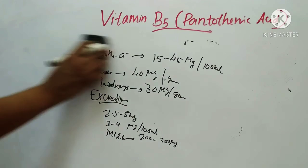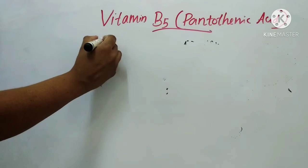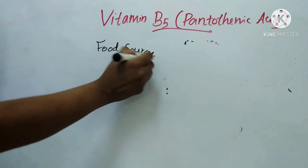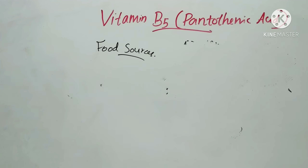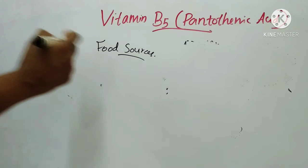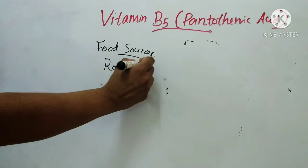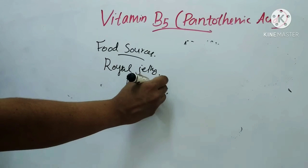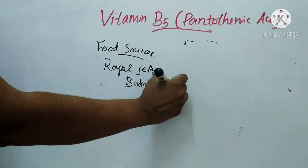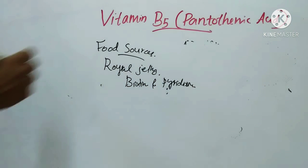Pantothenic acid is widely distributed in plants, animal tissues, and food materials. Excellent food sources include kidney, liver, egg yolk, yeast, cereals, and legumes. Fair sources are skimmed milk, chicken, certain fishes, potatoes, and molasses. The richest known source of pantothenic acid is royal jelly, which is also rich in biotin and pyridoxine.